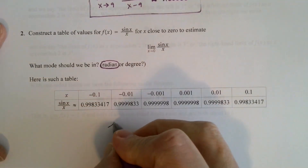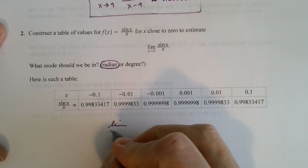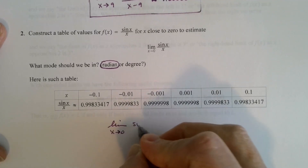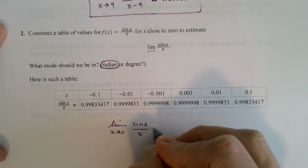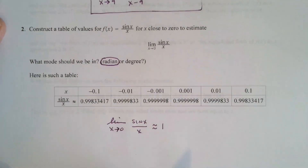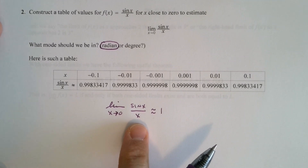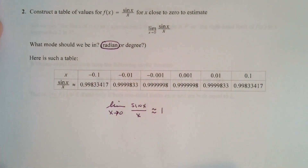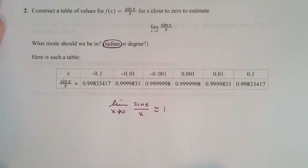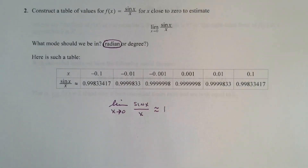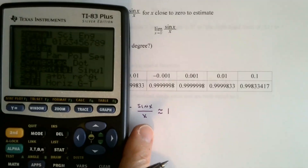The function is getting closer and closer to 1 — maybe 0.999999999999. I'm going to estimate that the limit as x approaches 0 of sine x divided by x is 1. And in fact, that is indeed the case. We will prove this later on with something called the squeeze theorem, and then later on in the course we'll prove it by another rule that will develop.